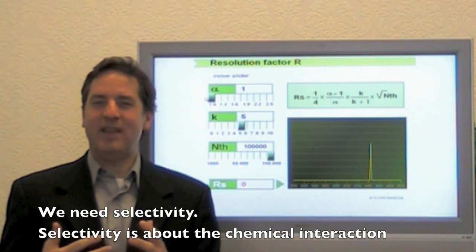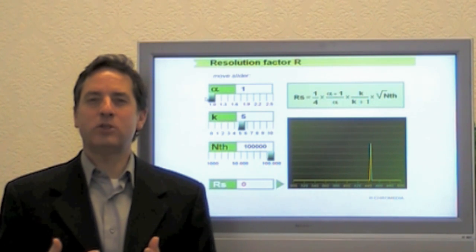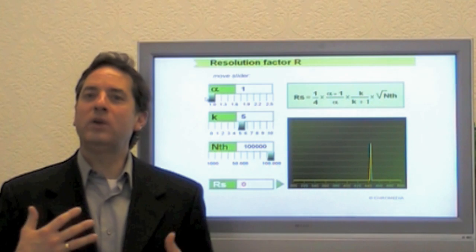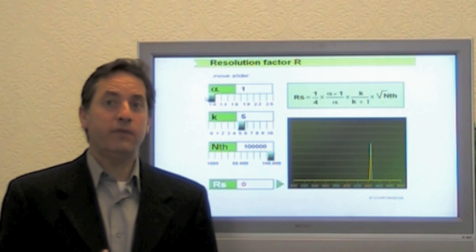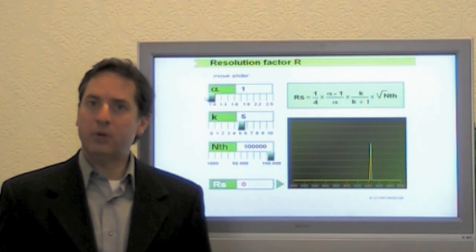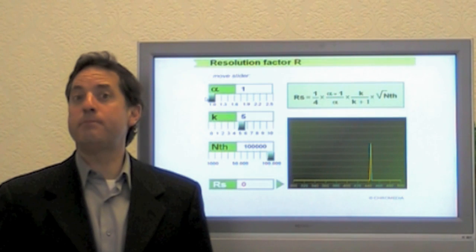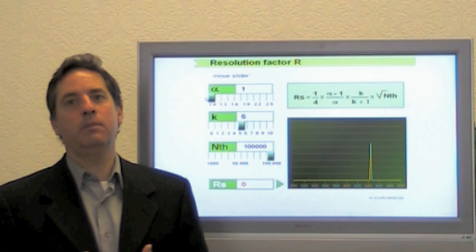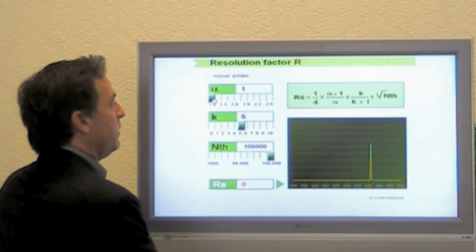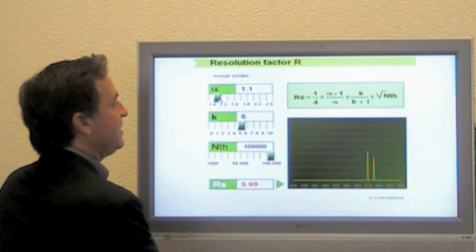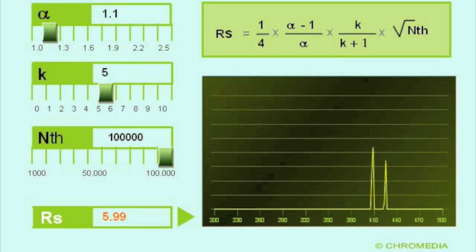So hexane and ethanol differ greatly by their polarity. So if I chose a polar stationary phase, like a wax column, I will see a much better separation. So essentially what I'm talking about here is to add some selectivity to the system, add some chemistry to get that separation.